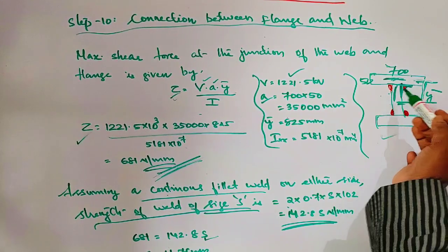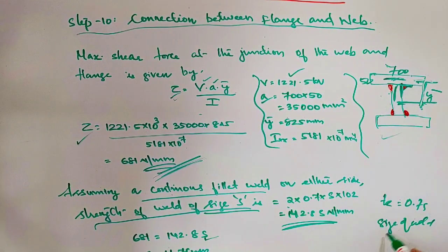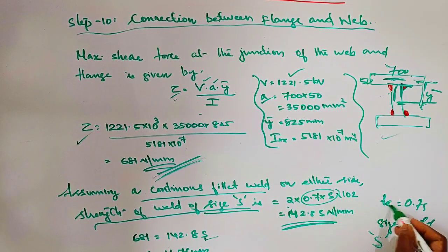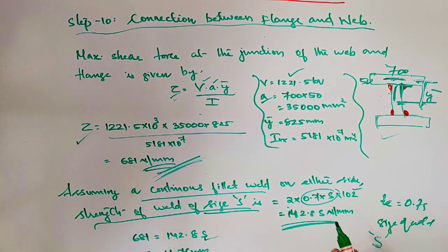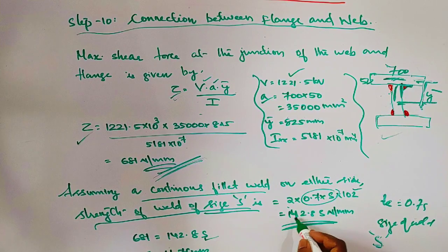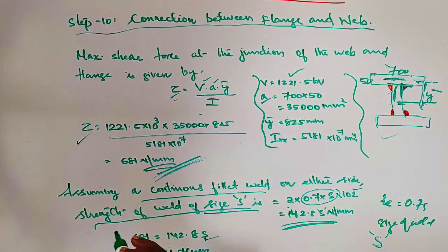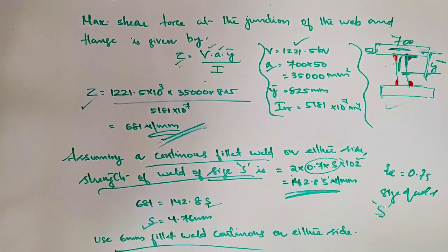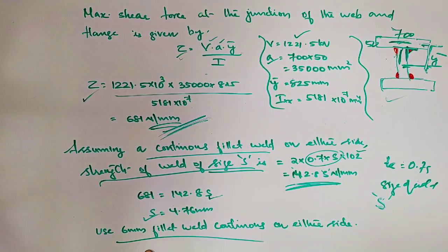The connection is a fillet weld continuous on either side. Let the size of the weld be denoted as s. The strength of the weld on either side is 2 × 0.7s × 102 = 142.8s N/mm, where 0.7s is the effective throat thickness and 102 is the permissible stress. Equating this to the maximum shear force of 681 N/mm gives the size of the weld as 4.76 mm. Use a 6 mm fillet weld.